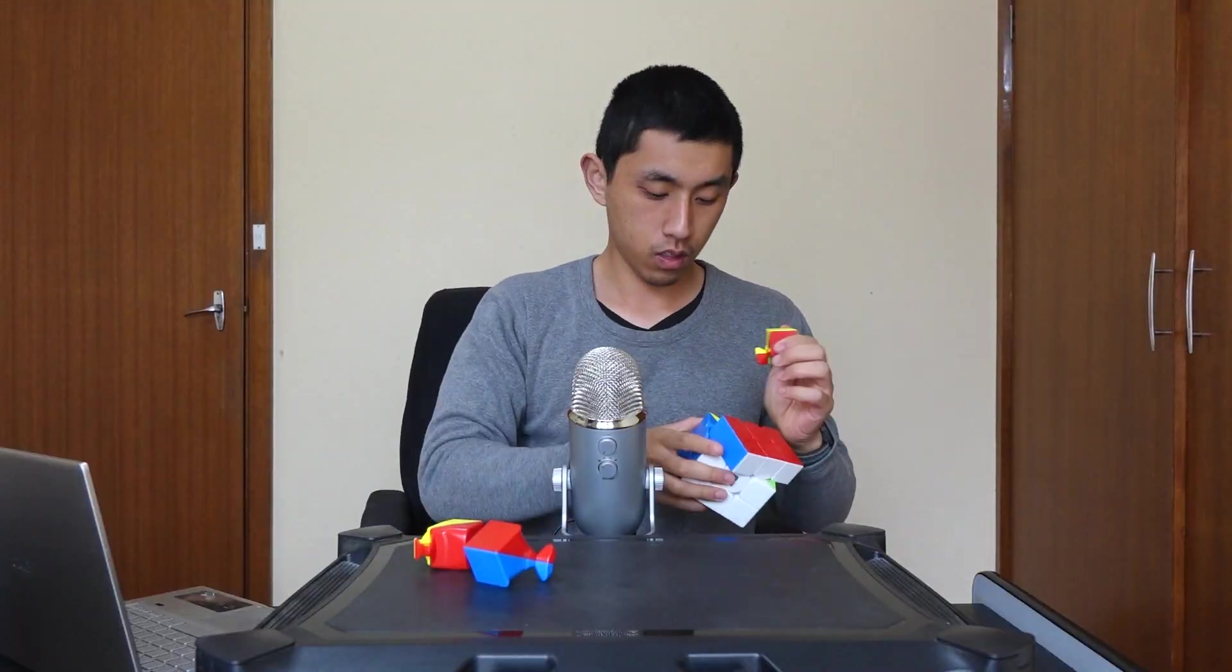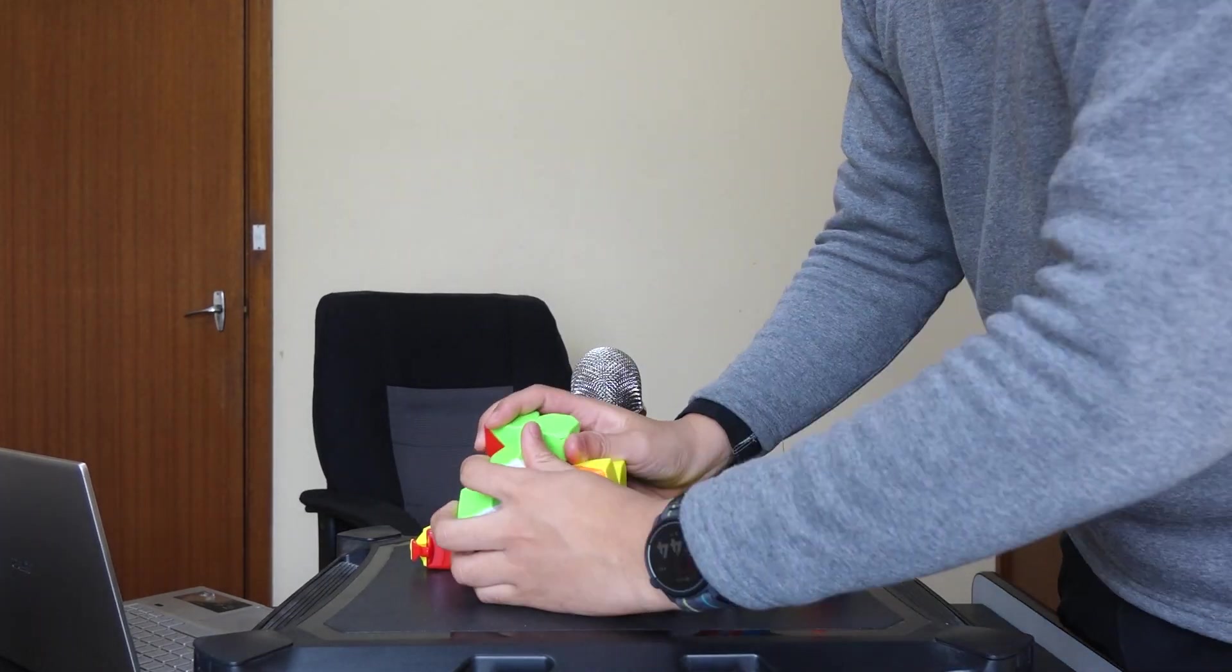This is a Rubik's Cube. It has 43 million million million possible combinations. But how many combinations does a 4D Rubik's Cube have? Before we get to that, we should cover why the normal Rubik's Cube has so many possible combinations. To understand this, let's disassemble the Rubik's Cube first.